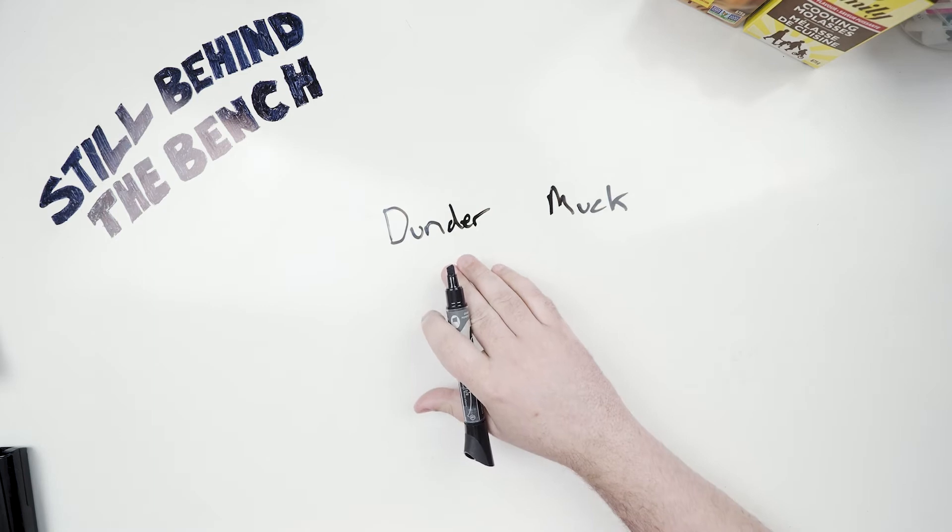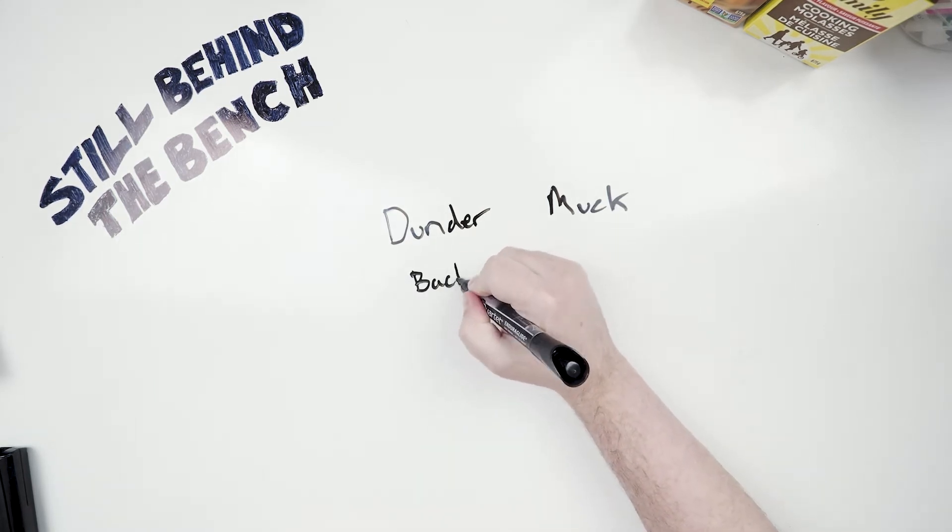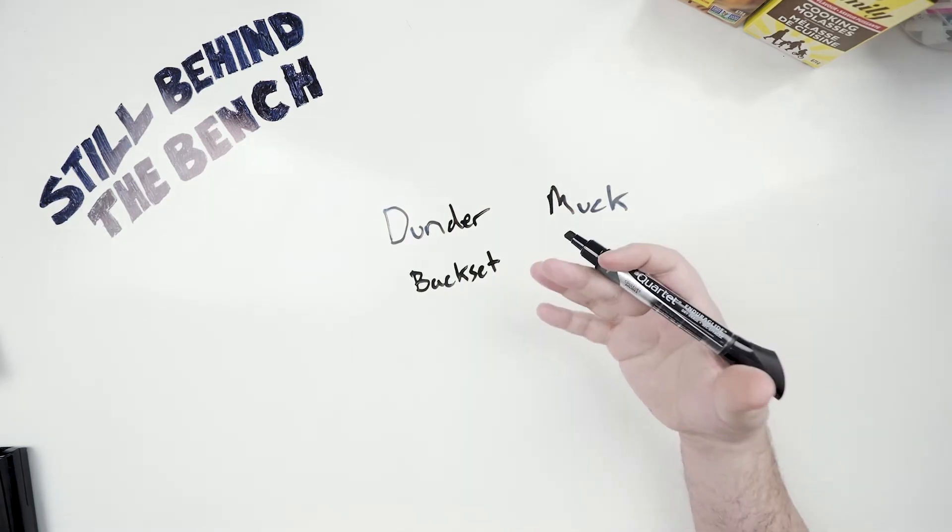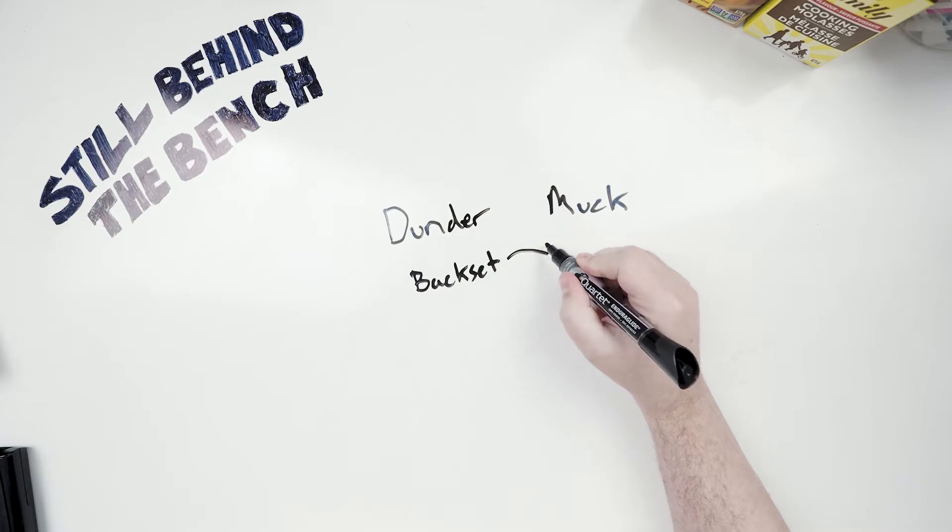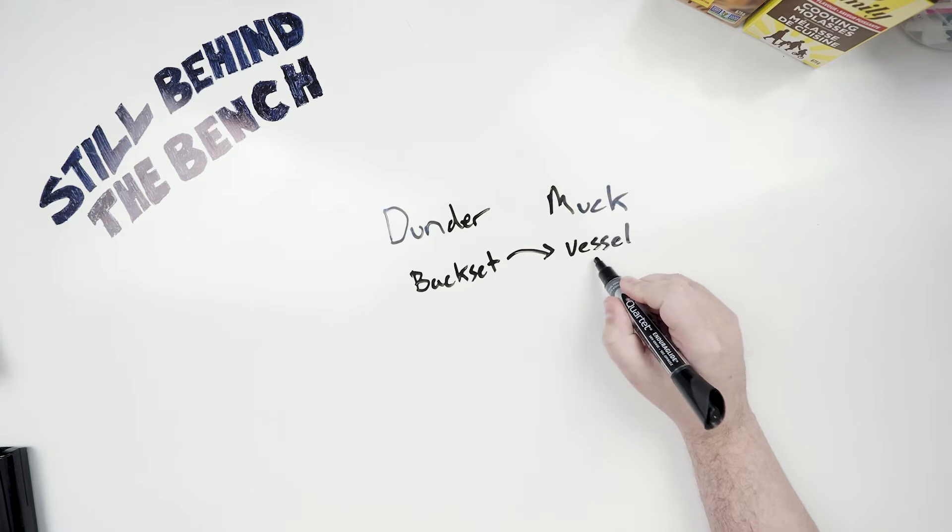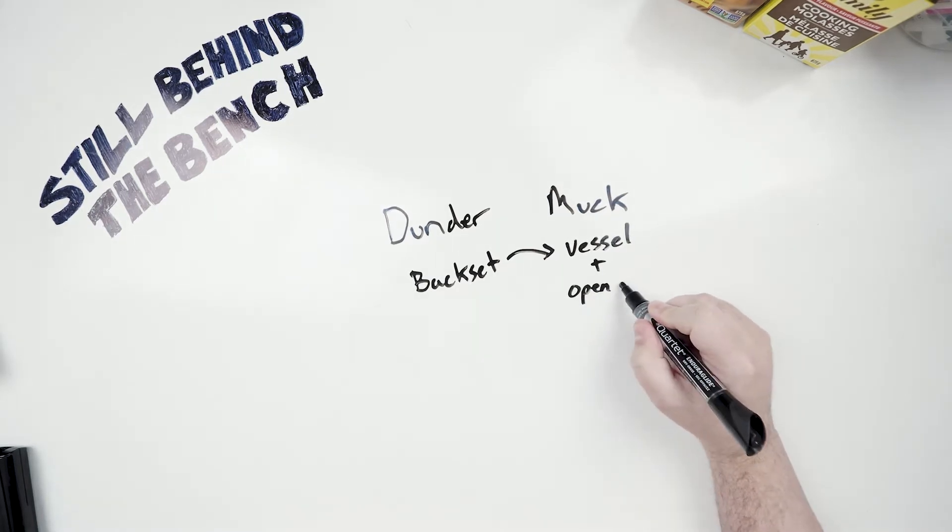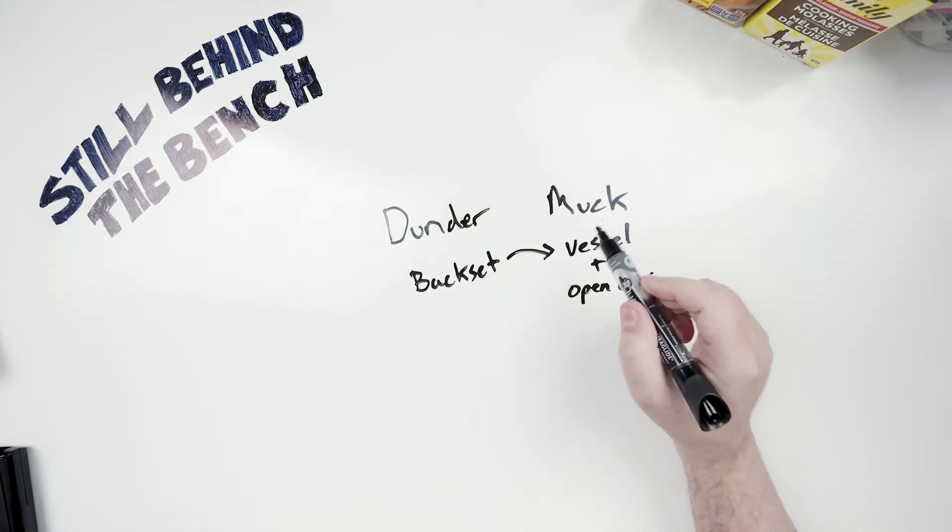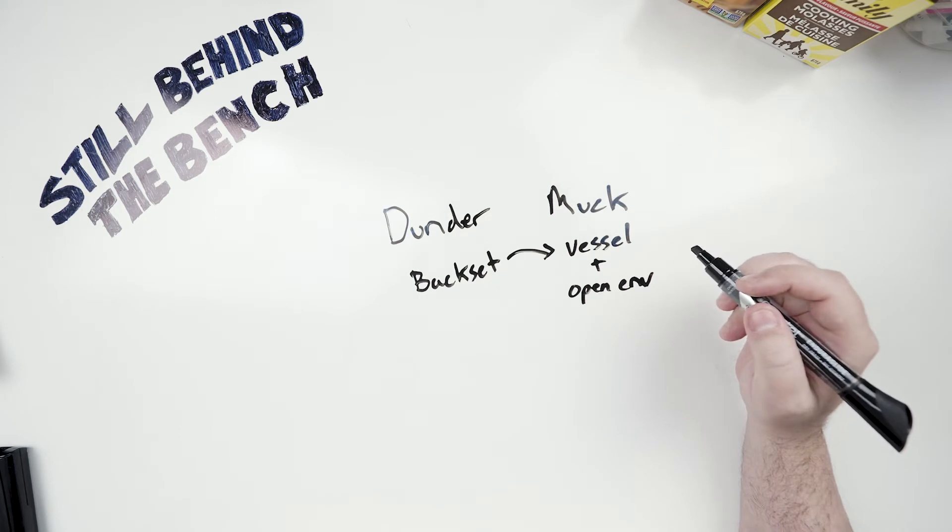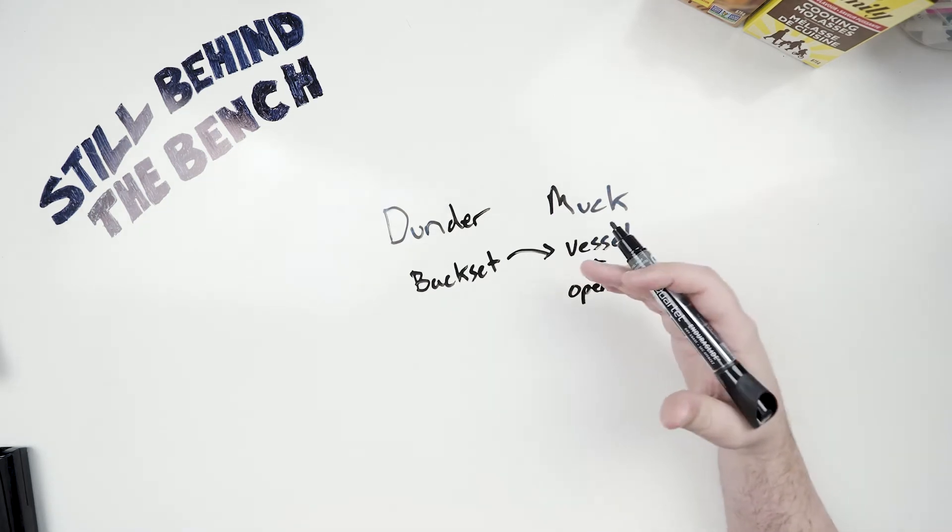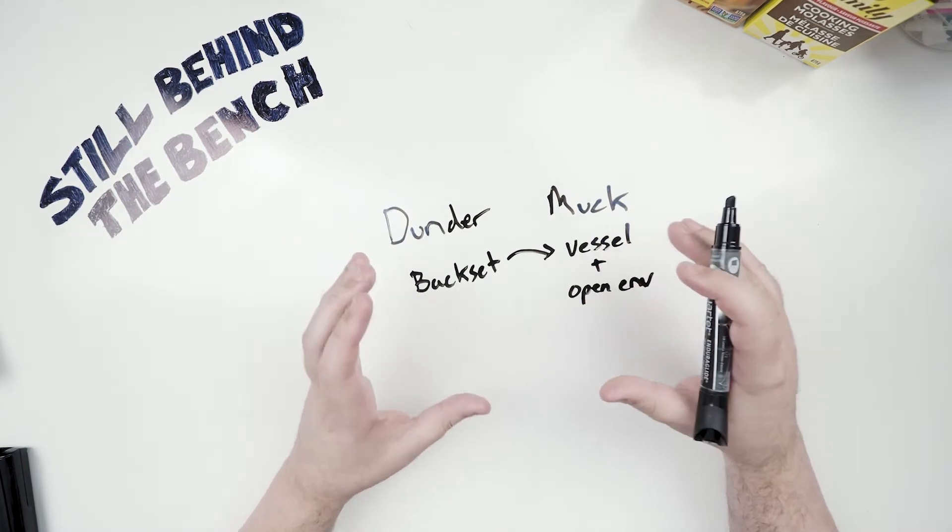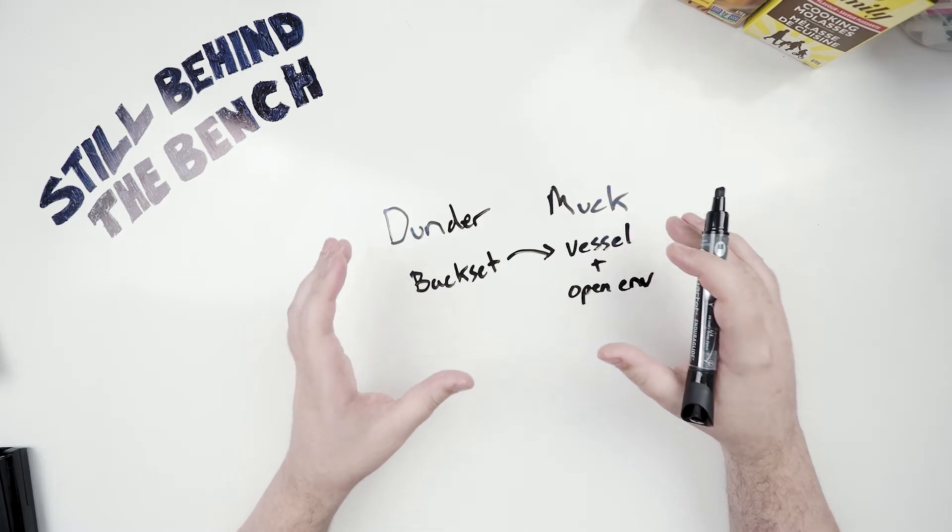Dunder is the rum specific term for backset - what's left over in the still after you've done a distillation. When you take that backset and you put it into some sort of vessel that's open to the environment, you've created muck. It's called muck because it's contaminated by naturally present microbes, so it changes quite significantly from the dunder.